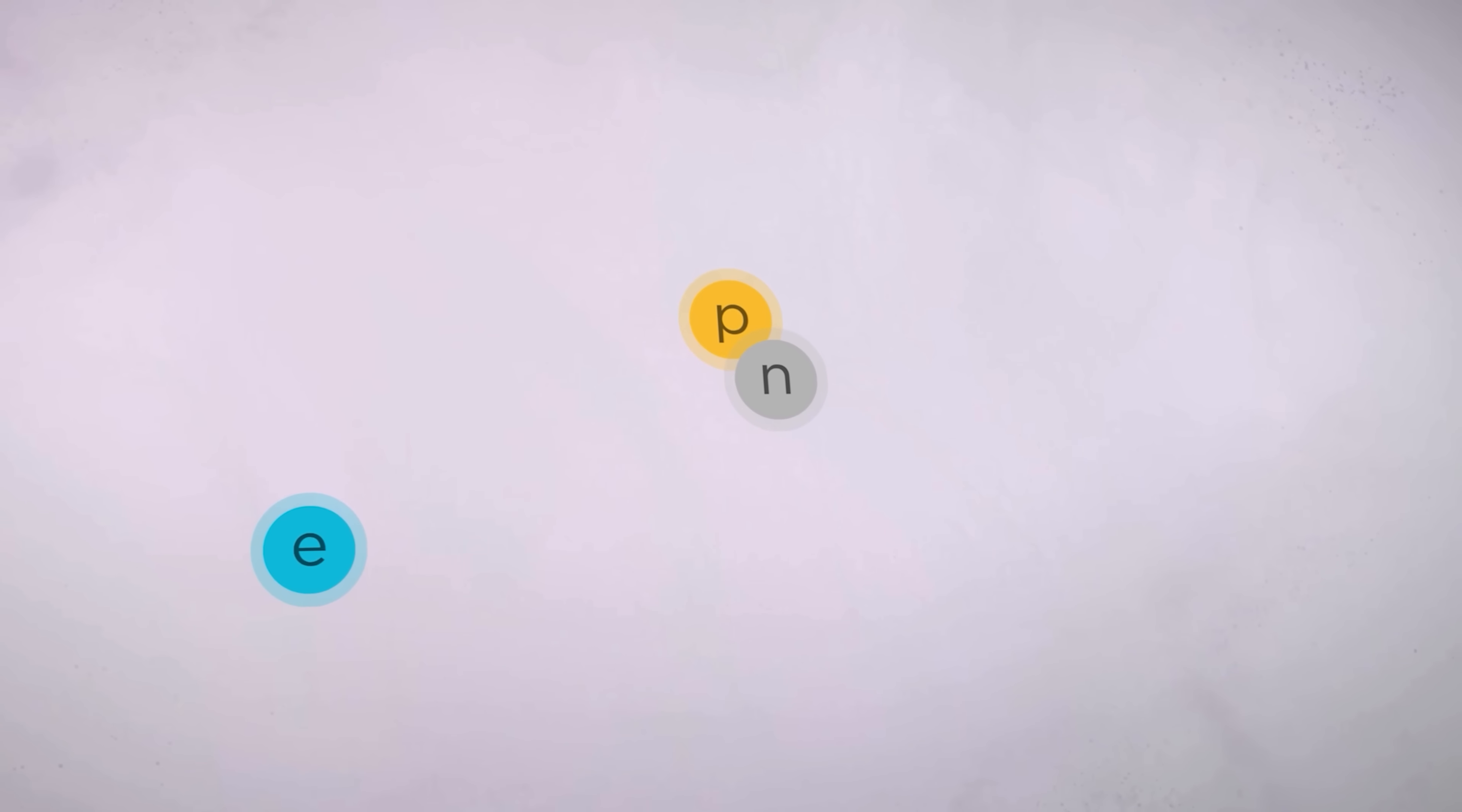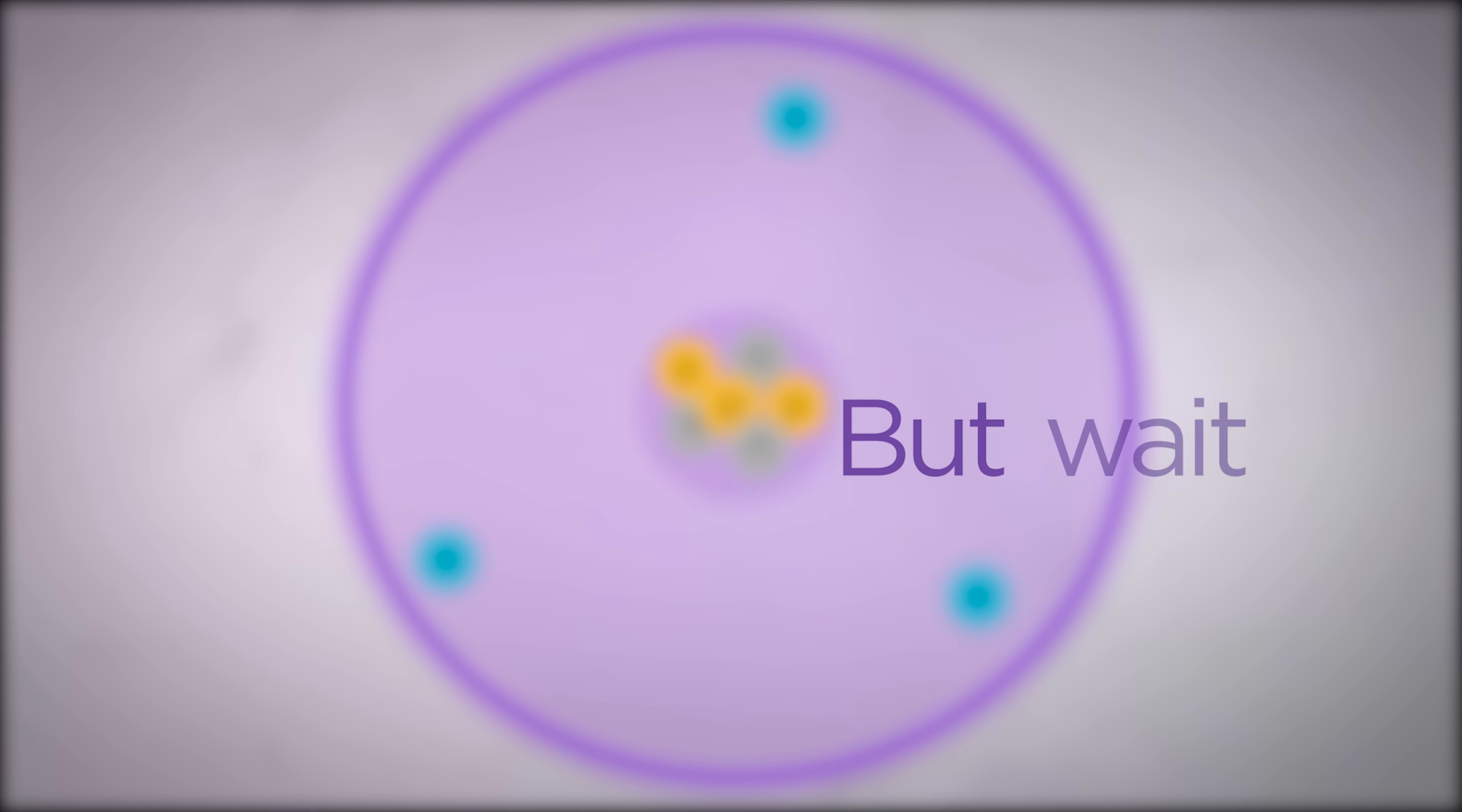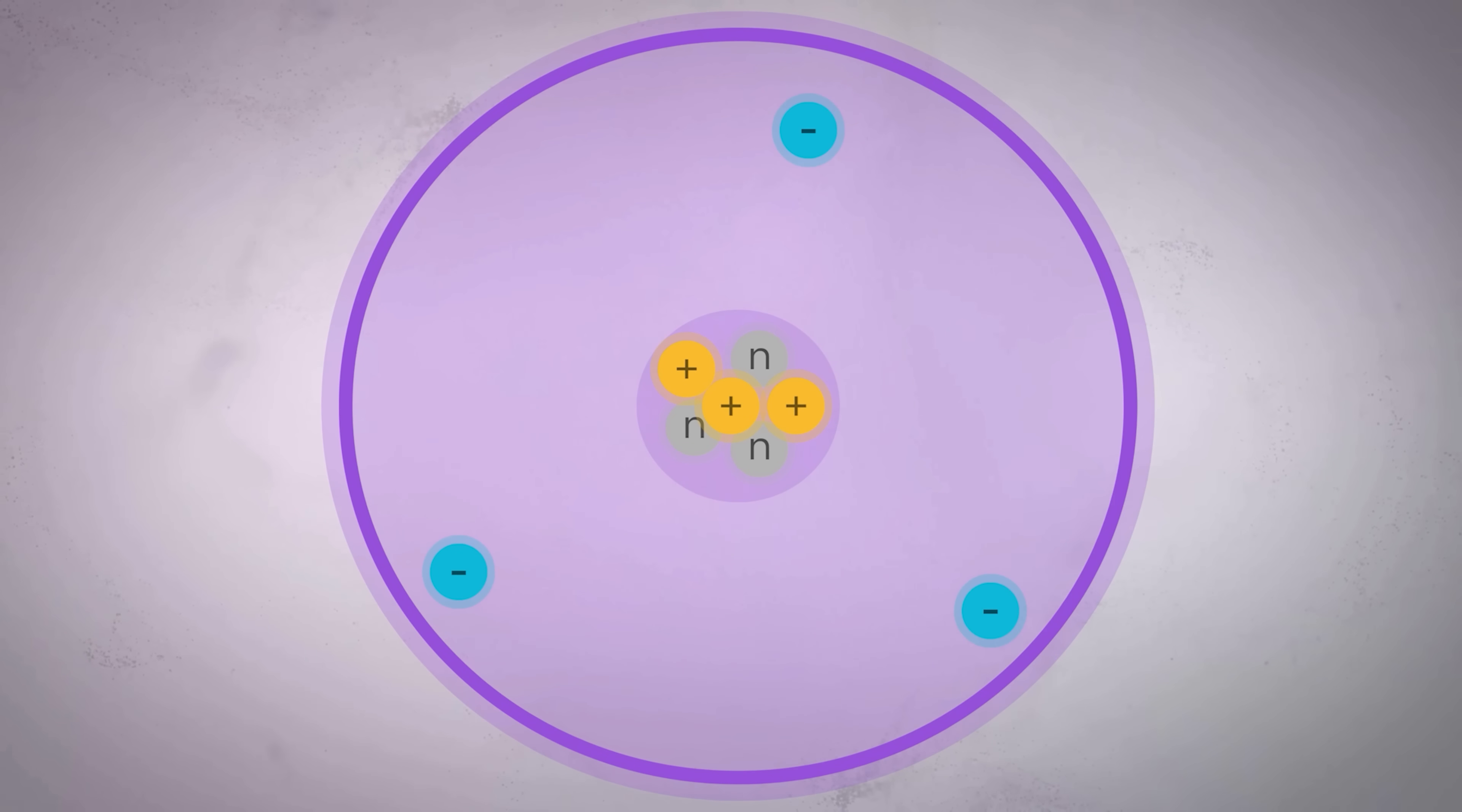These two are the proton's best friends: the electron and the neutron. They love hanging out together. Toss in a few more and you have just built an atom. But wait a second, we may have a problem. Because protons and electrons have opposite charges and should attract each other, right? Kind of like you attract ridiculously complicated science. But if they attract, why don't they just collide and explode?